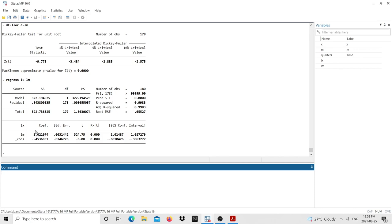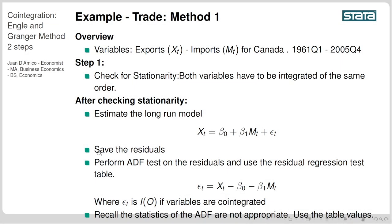So in the long run exports are increasing more than imports, which keeps a positive trade balance. What we need to do now is save the residuals. We've estimated the long-run model, and we have to perform the augmented Dickey-Fuller test on the residuals using the co-integration table values — not the standard critical values — because we cannot rely on standard critical values for a series resulting from a regression. If the error term is I(0), the variables are co-integrated.